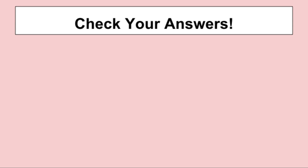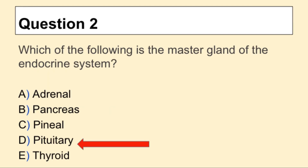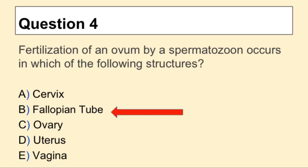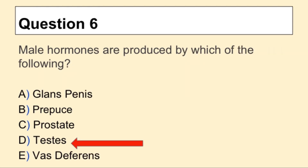Now it's time to go over your answers and see how many you got right. Question 1: the answer was E, pernicious anemia. Question 2: the answer was D, pituitary. Question 3: the answer is C, electrolytes. Question 4: the answer is B, fallopian tube. Question 5: the answer is B, Bartholin's.